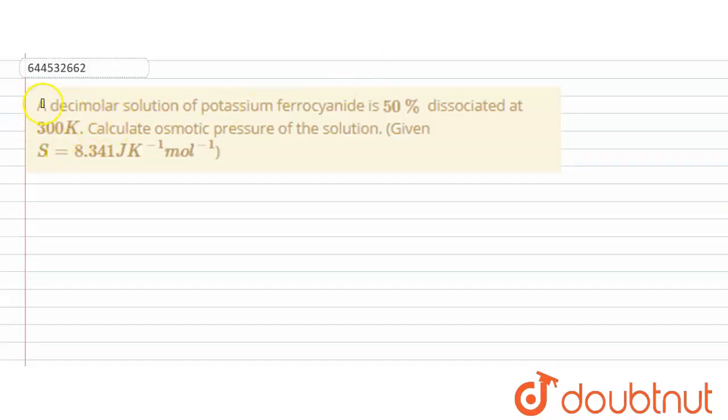In this question it is given that a decimolar solution of potassium ferrocyanide is 50% dissociated at 300 Kelvin. Calculate the osmotic pressure of the solution, given that the value of gas constant is 8.314 joule per Kelvin per mole.